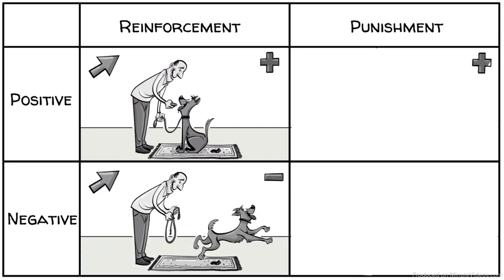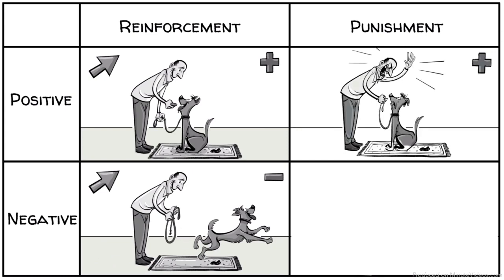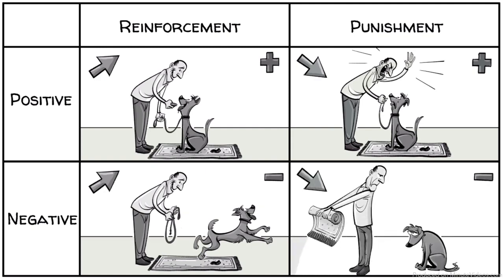If punishment is positive, we add an unpleasant response to decrease behavior. When punishment is negative, we also want to decrease behavior, now by removing something pleasant, like the comfy carpet.